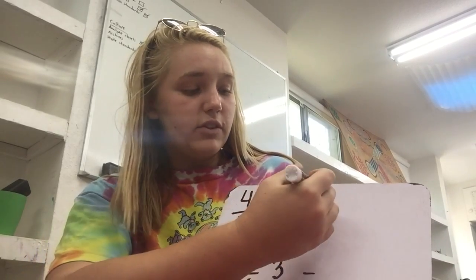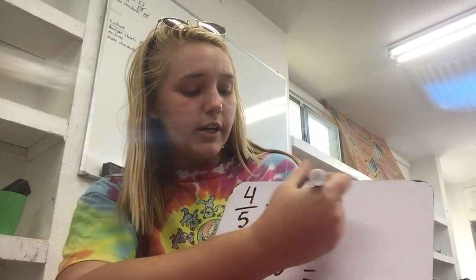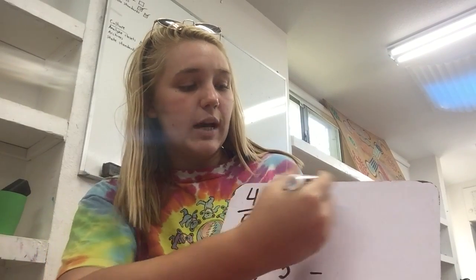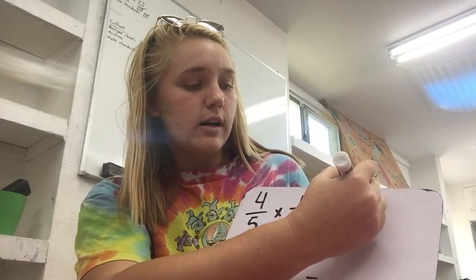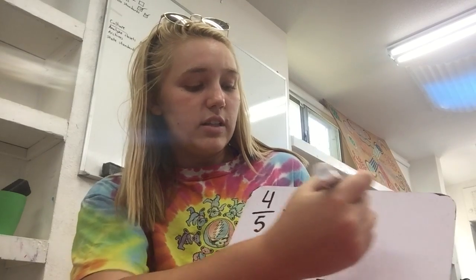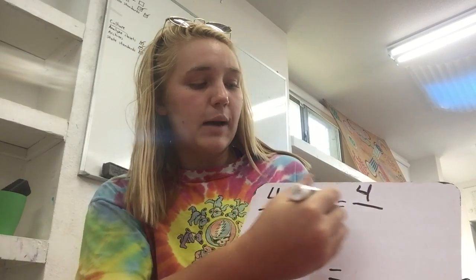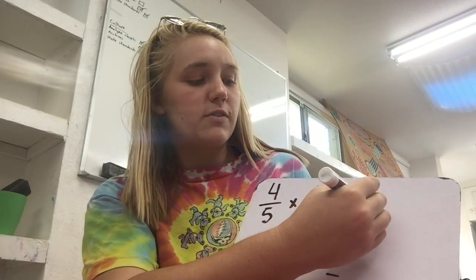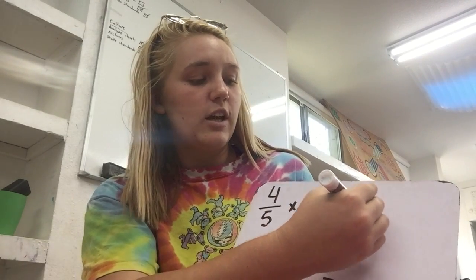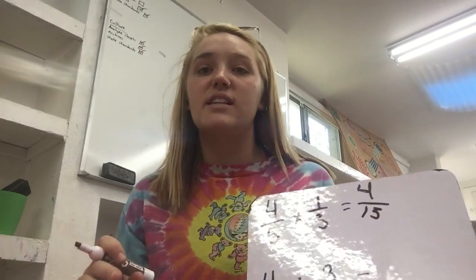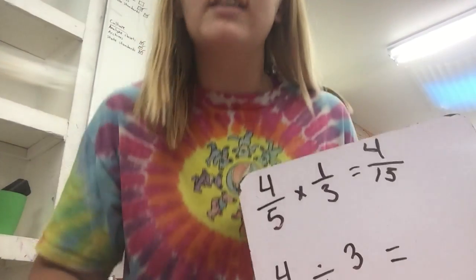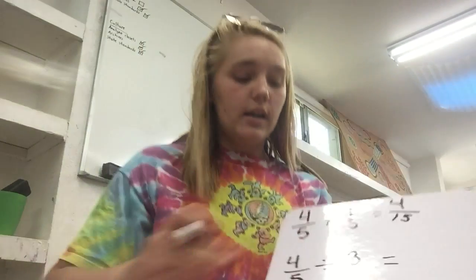The numerator would be four times one, which is four. The denominator would be five times three, which is fifteen. So if you got four-fifteenths, that is absolutely correct.